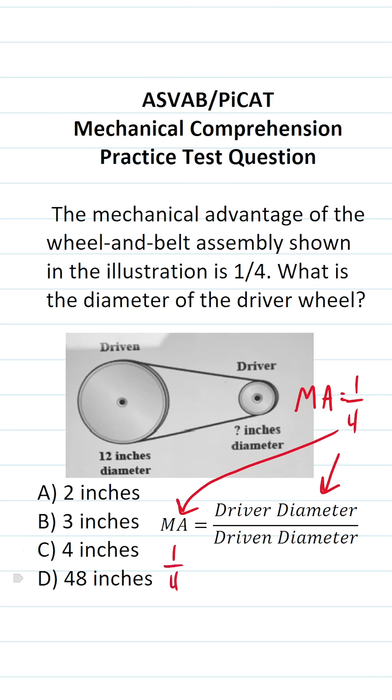This becomes one-fourth equals what is the diameter of the driver wheel? That's unknown. So let's call it X. What is the diameter of the driven wheel? It's right here. You can see that it's 12.